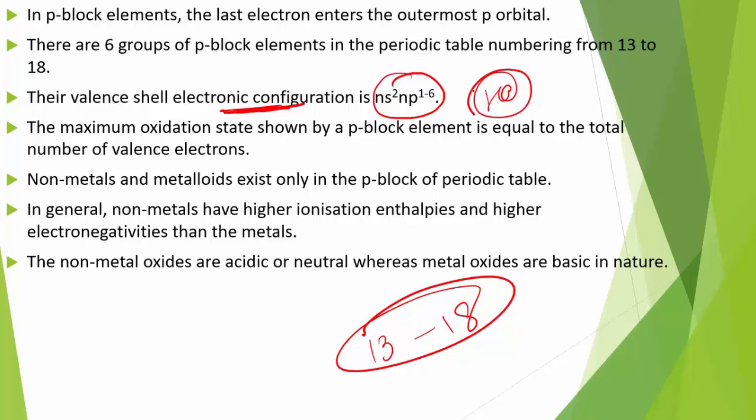The inner core of the electronic configuration may differ. The inner core of elements greatly influences their physical properties like atomic radius, ionic radii, ionization enthalpy, as well as chemical properties. The maximum oxidation state shown by a P-block element equals the total number of valence electrons — the sum of S and P electrons.